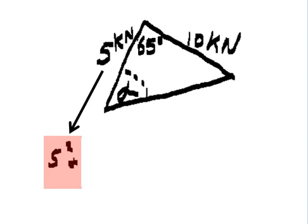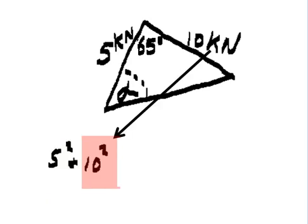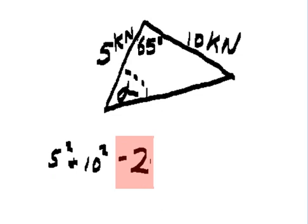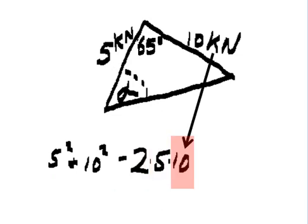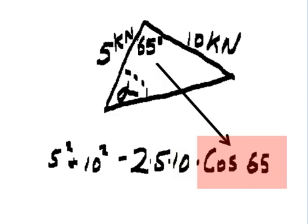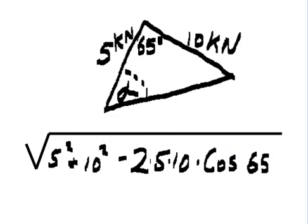I write down: the square root of 5 squared plus 10 squared minus 2 times 5 times 10 times cosine 65 degrees. Take the square root of this and what do I get?